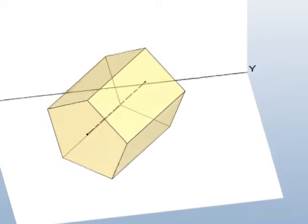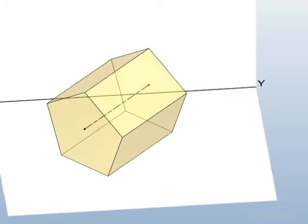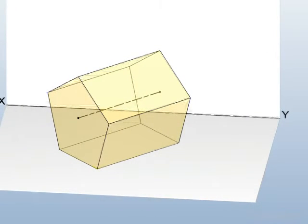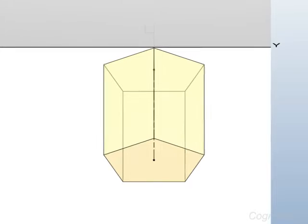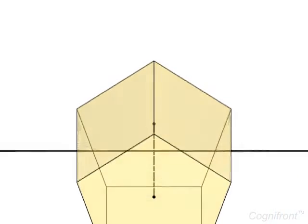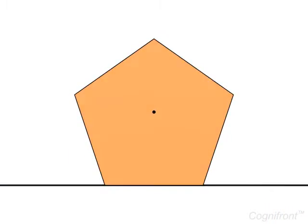Now to draw the orthogonal views in this position, we shall assume that its axis is perpendicular to VP. Observe that the true shape and size of the pentagonal prism is seen in the front view.